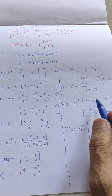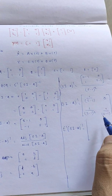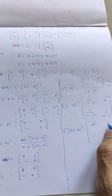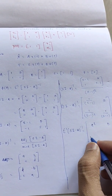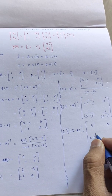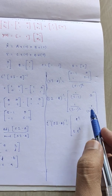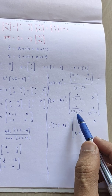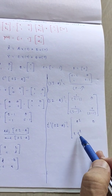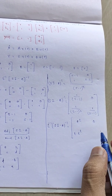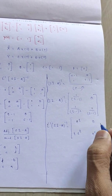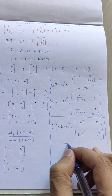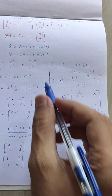We want the inverse Laplace transform of (sI minus A) inverse. Taking inverse Laplace transform of each element: 1/(s minus 1) gives e^t, 0 remains 0, 1/(s minus 1)² gives t·e^t, and 1/(s minus 1) gives e^t. This is the final state transition matrix for this equation.